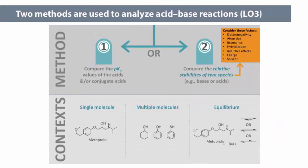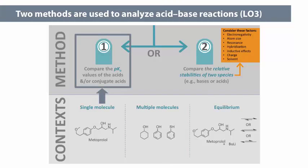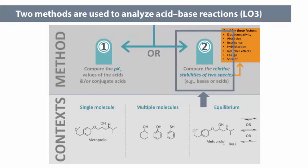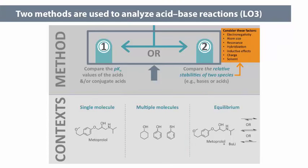There are two main methods used to analyze acid-base chemistry — whether to identify the most acidic or basic atom in a single molecule, between molecules, or to analyze more complex acid-base reactions. You can either compare the experimentally determined pKa values of the most acidic protons (Method 1), or you can compare the relative stability of two species, for example two bases or two acids (Method 2). With Method 2, we can explain why various acids or bases are stronger than others, and why reaction equilibria proceed as they do. In principle, either method can be used in any situation, though sometimes it's easier to use one or the other. We will discuss these situations in more detail during the module.